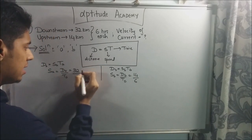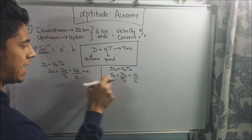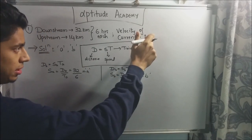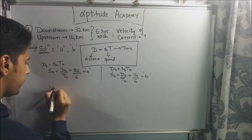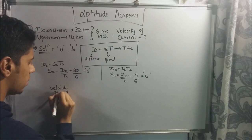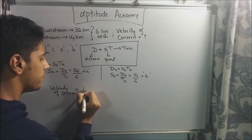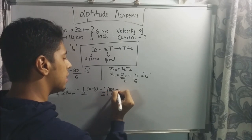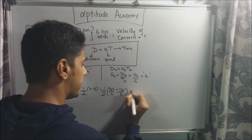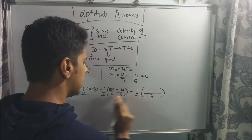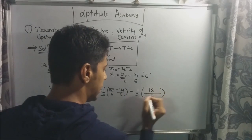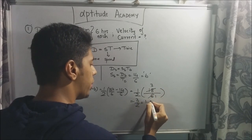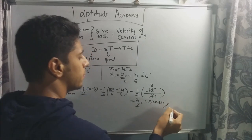SA is, in fact, A — it's the speed downstream — and SB is B. Now, from the previous lecture, I gave you a shortcut formula for the velocity of the current: the velocity of the stream is half of A minus B. So that is half of (32/6 minus 14/6). The LCM is 6, giving us half of (32 minus 14)/6, which is half of 18/6, giving 3/2, or 1.5 kilometers per hour. This is your answer.